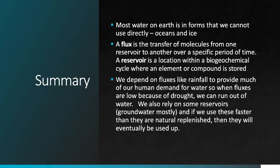To summarize the key points from this video: first, most water on Earth is in forms we cannot use directly — mostly in oceans and ice. The two key definitions are fluxes and reservoirs. We also talked about how to calculate residence time by taking the reservoir size and dividing by the flux, assuming inputs and output fluxes are equal and the reservoir size is constant. Lastly, these concepts matter because we depend on fluxes like rainfall to meet much of our human demand for water. When fluxes are low due to drought, we can run out of water, at least temporarily. We also rely on reservoirs — particularly groundwater — and if these reservoirs are used faster than they're replenished, they'll eventually be used up.